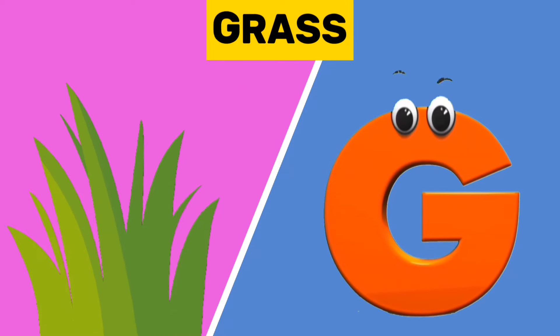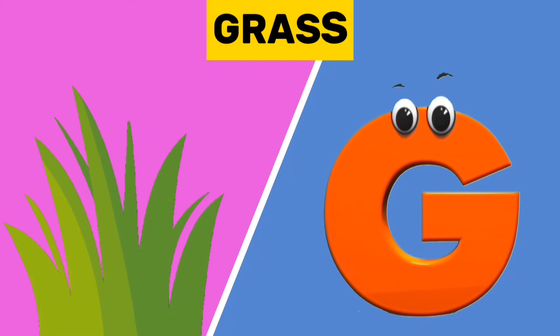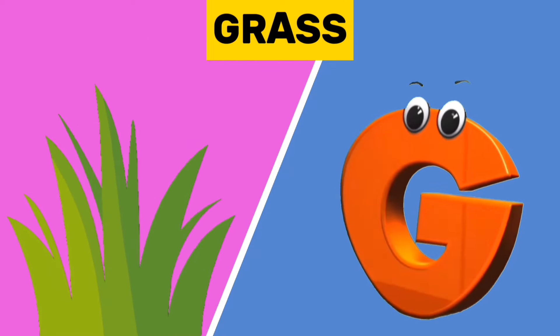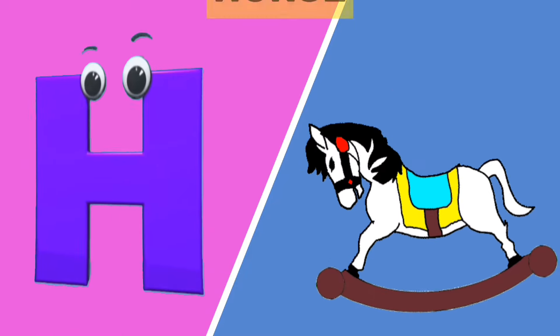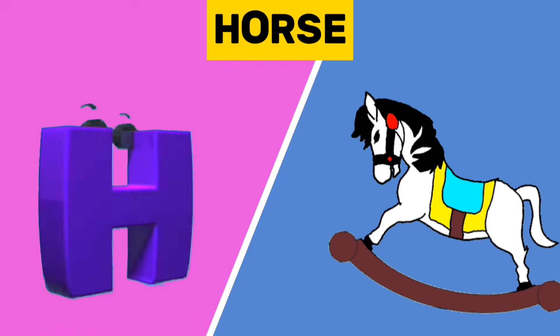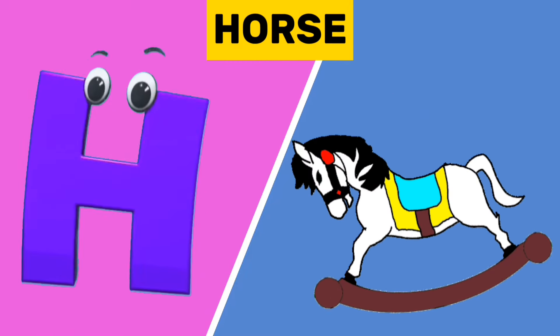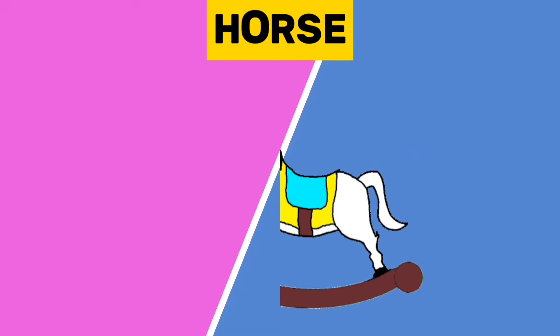G is for grass. G, g, grass. H is for horse. H, h, horse.